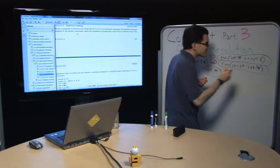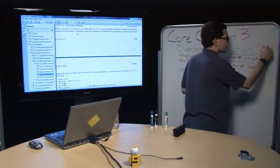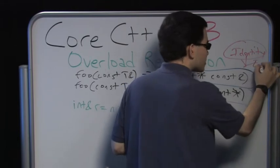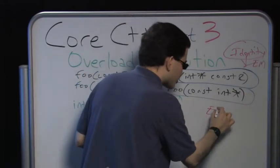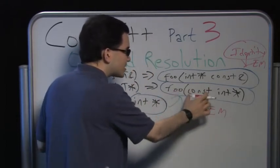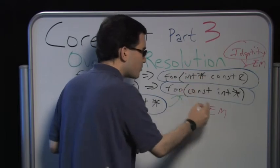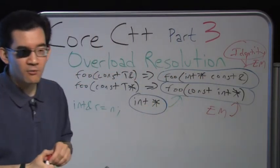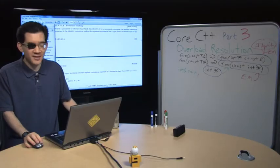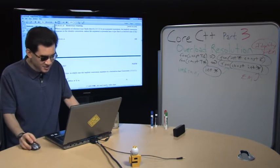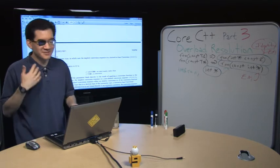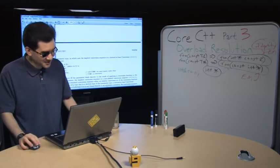Going back to the overload resolution material: when it binds directly, it's the identity conversion. So the const T& binding is identity. And it's considered an exact match. The const T* overload was also considered an exact match, but it's not an identity — it required that qualification conversion to apply constness to the thing being pointed to.